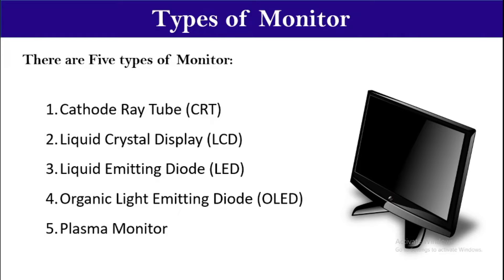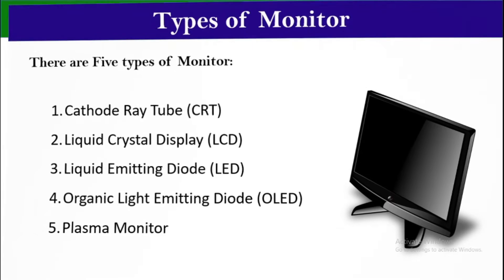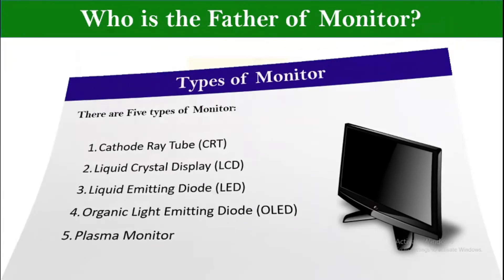Number two is liquid crystal display — LCD. Number three is light emitting diode — LED. Number four is organic light emitting diode — OLED. Number five is plasma monitor. So these are our five types of monitors.